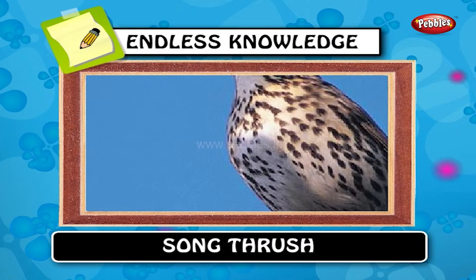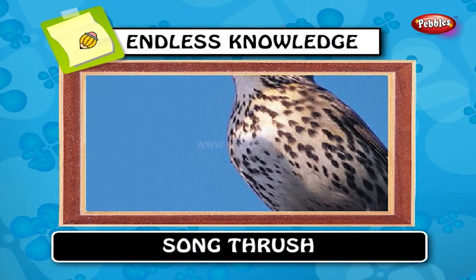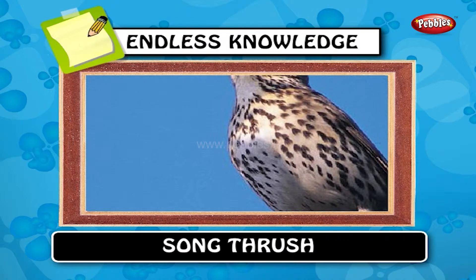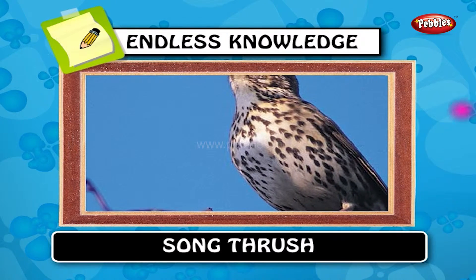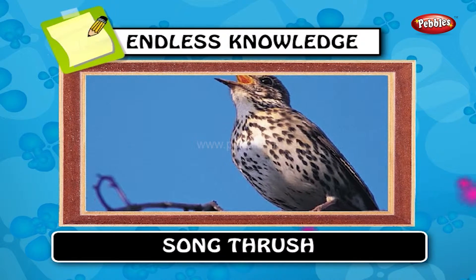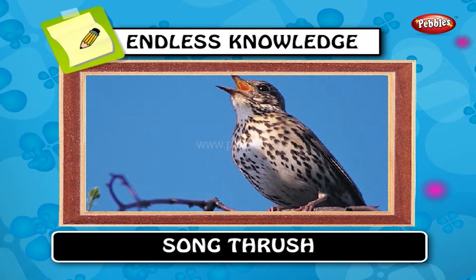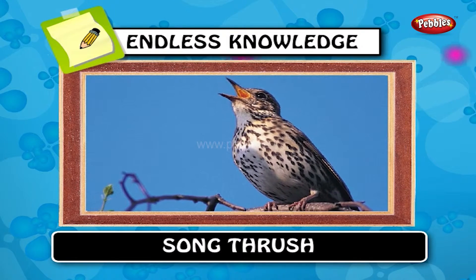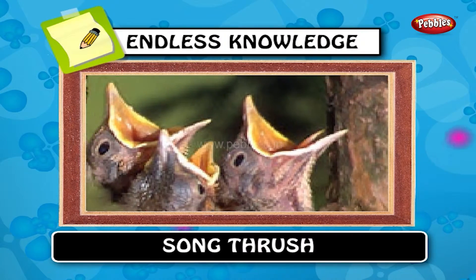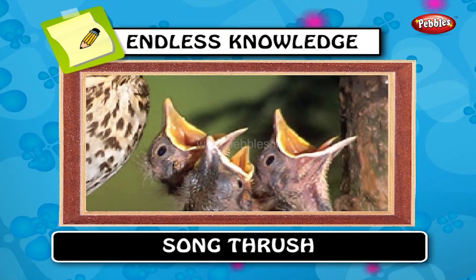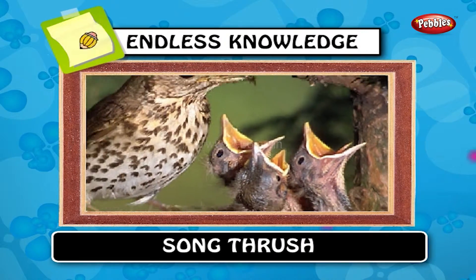Song thrush. It has brown upper parts and black spotted cream or buff underparts, and has three recognized subspecies. Singing is a bird's way to communicate.